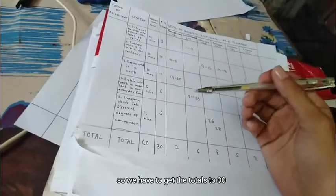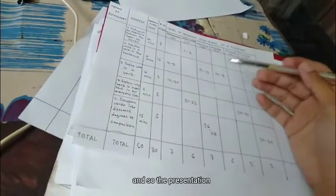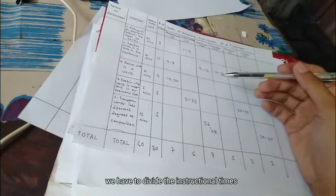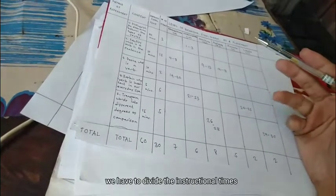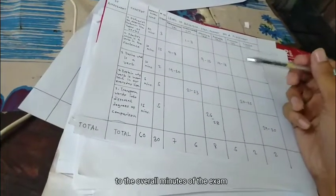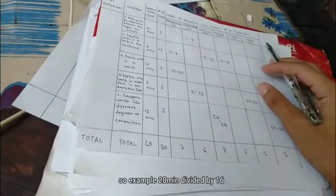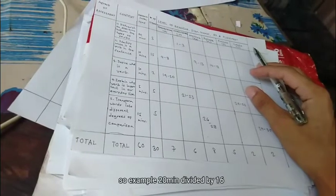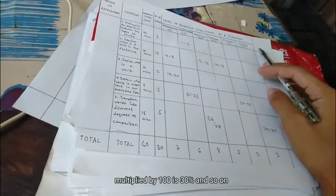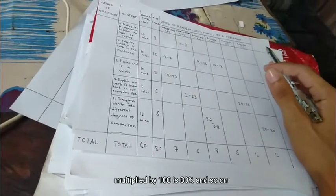So we have to get the totals to 30. And so for the percentage, we have to divide the instructional times by the overall minutes of the exam and then multiply it by 100. So for example, 20 minutes divided by 16 multiplied by 100 is 30% and so on.